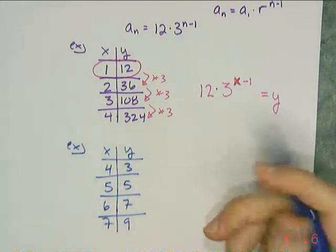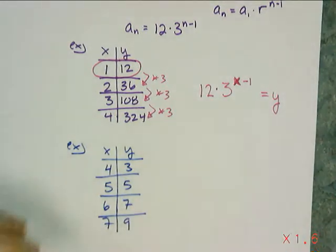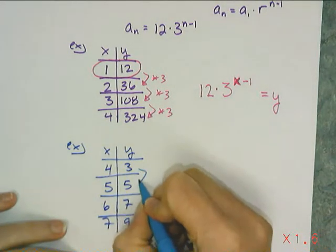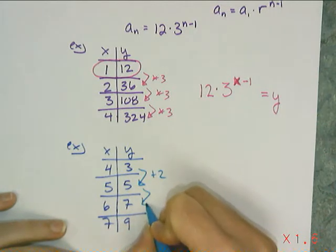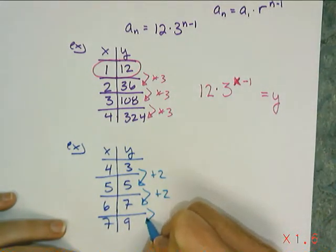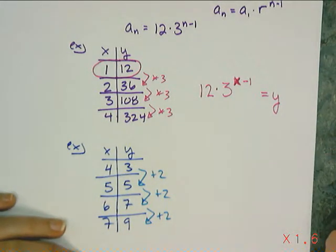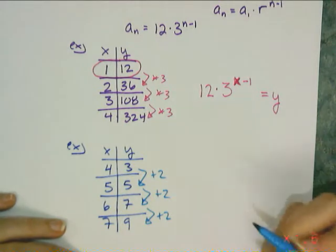So I'm going to use what I know from arithmetic sequences. And I know that this has a plus 2, a plus 2, and a plus 2.